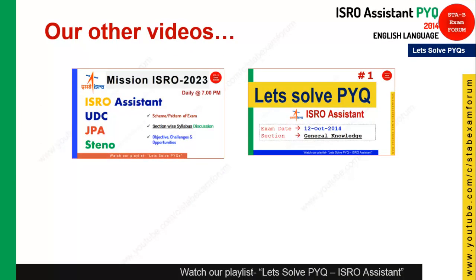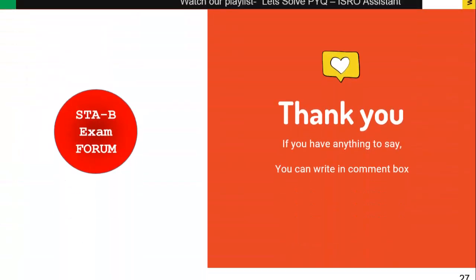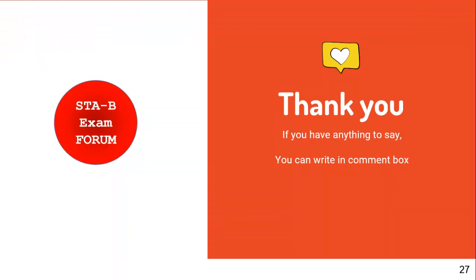That's it for today. We have seen and solved all the questions from the 2014 ISRO Assistant English language section. If you haven't watched video one covering General Knowledge from the same 2014 exam, do check that out. You can also find the exam pattern and syllabus video on our channel. Write in the comment box if you have anything to say. Thank you for watching and have a nice day.